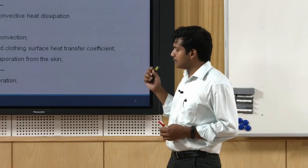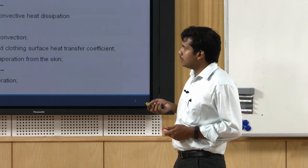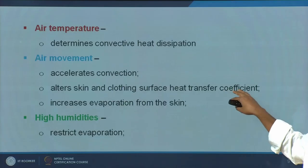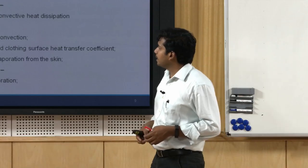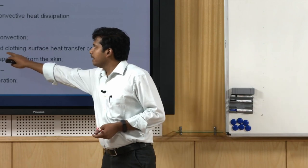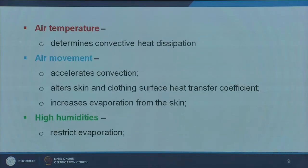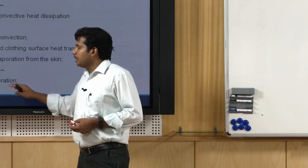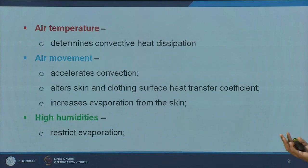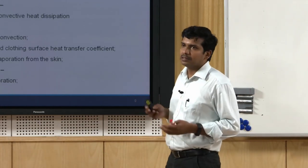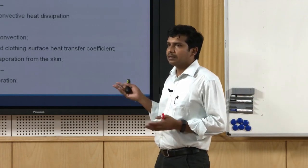Air temperature determines the convective heat dissipation — how effective convective heat losses or gains happen is determined by air temperature. Air movement accelerates convection, alters the skin and clothing surface heat transfer coefficient, and increases evaporation from skin — higher velocity means better heat losses during summer. When humidity is really high — 90 to 95 percent — it restricts the amount of evaporation that can happen, so you start feeling more uncomfortable. This is typically what happens in coastal areas or humid climates.